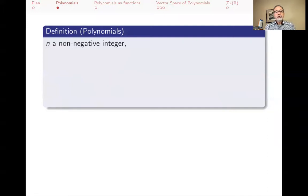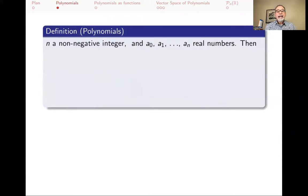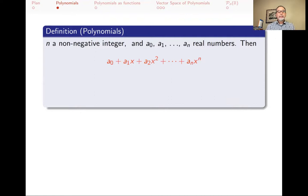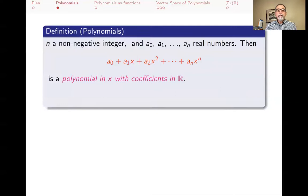To define what a polynomial is — you've probably seen polynomials — you start with a non-negative integer n, so n could be 0, 1, 10, 15, 47, and then you pick n plus 1 real numbers: a₀, a₁, up to aₙ. You then form an expression of the form a₀ plus a₁x plus a₂x² plus dot dot dot plus aₙxⁿ. An expression of that form is called a polynomial in x with coefficients in ℝ.